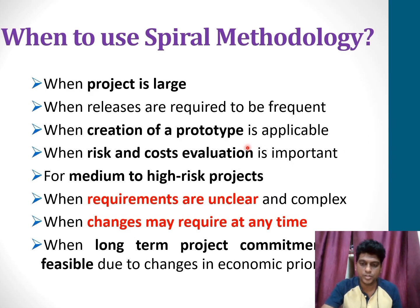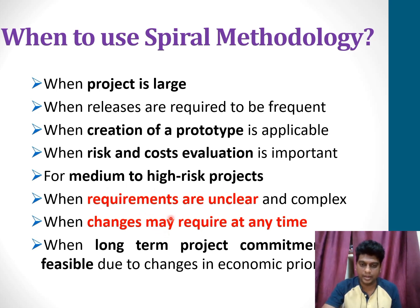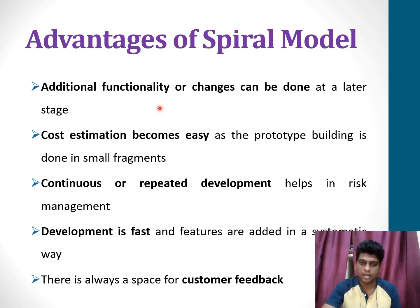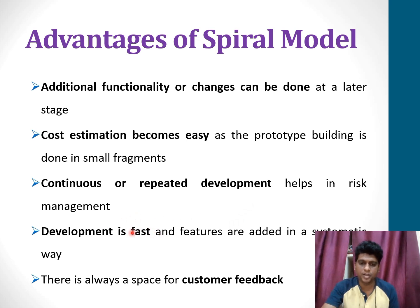This model supports risk handling, and the project is delivered in loops. Each loop of the spiral is called a phase of the software development process. The spiral methodology is used when the project is a large one, when creating prototypes is needed, when risk and cost evaluation is very important, and it is applicable for medium to high risk projects where requirements are unclear and complex. Changes can be done even at later stages.